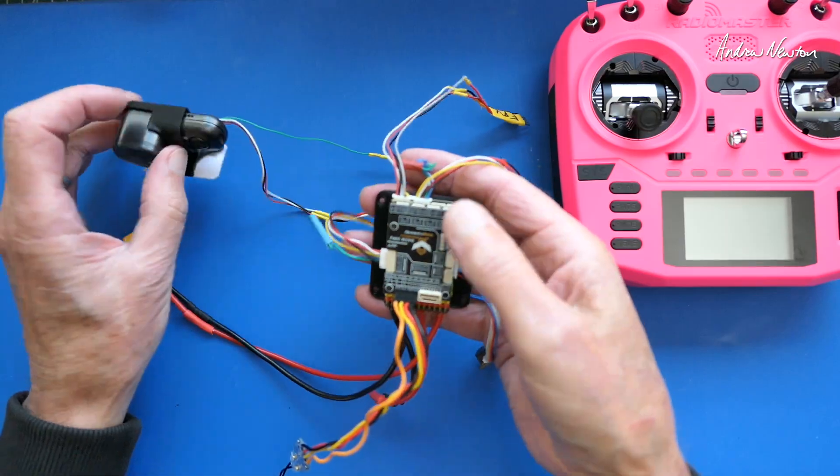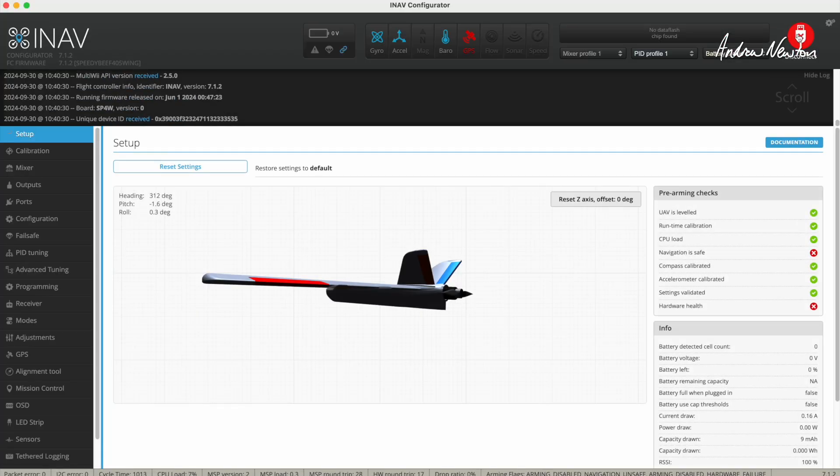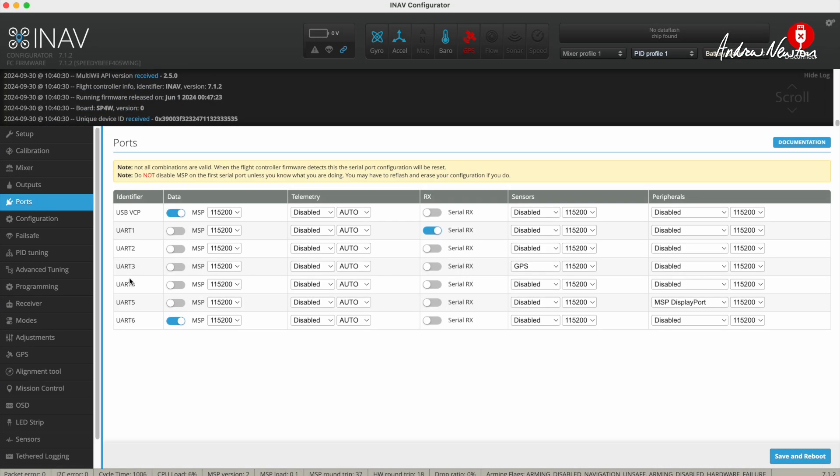Then we go over to the configurator. We connect the board, go to Ports. We've connected the camera to UART4, so in UART4 peripherals we will choose Runcam device. Save and reboot that.